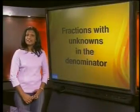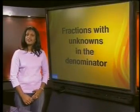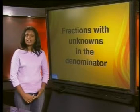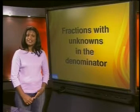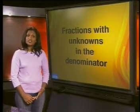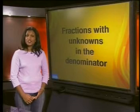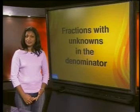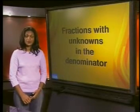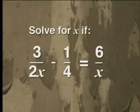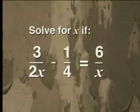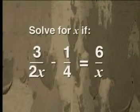In our previous lesson, the denominators of the fractions consisted of numbers. In this lesson, we will work with fractions that have unknowns in the denominator. Take a look at this example: solve for x if 3 divided by 2x minus a quarter is equal to 6 divided by x.